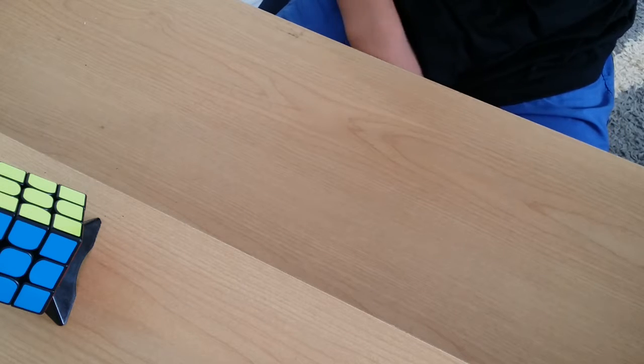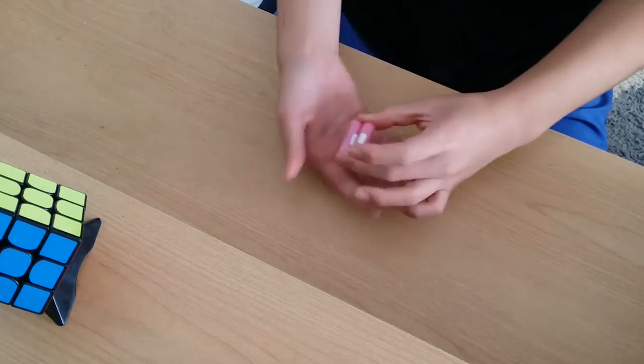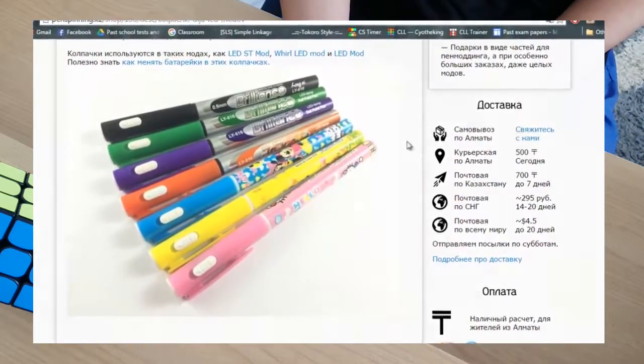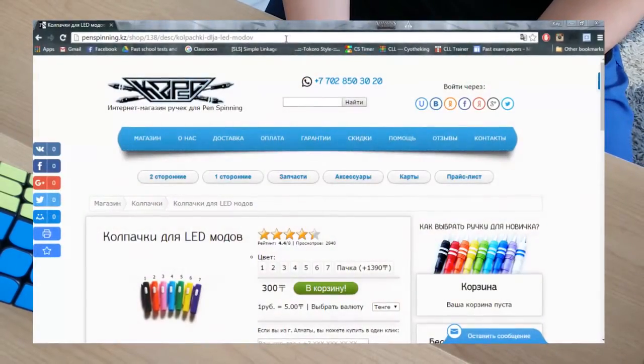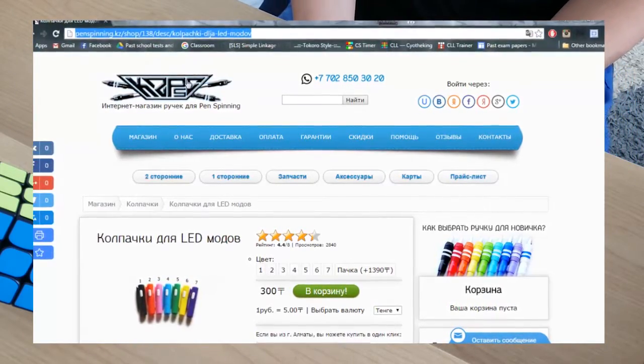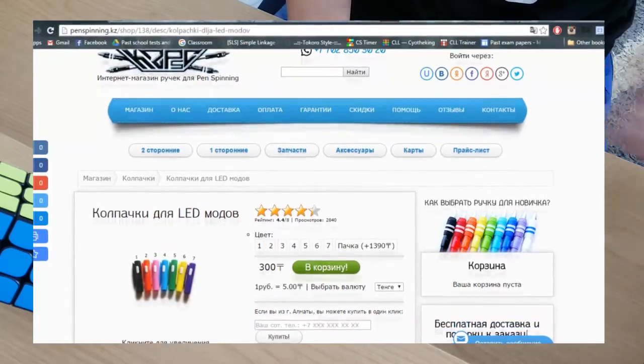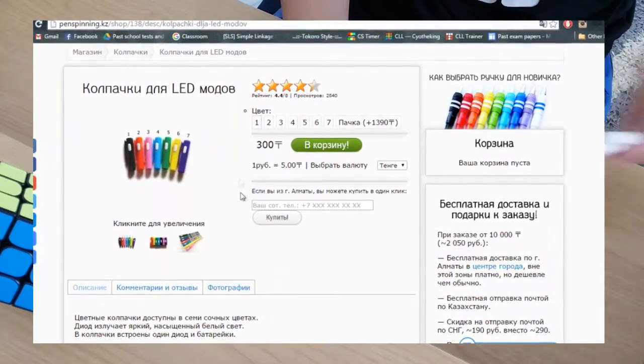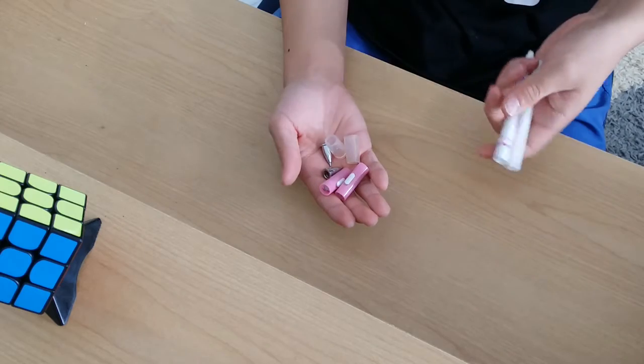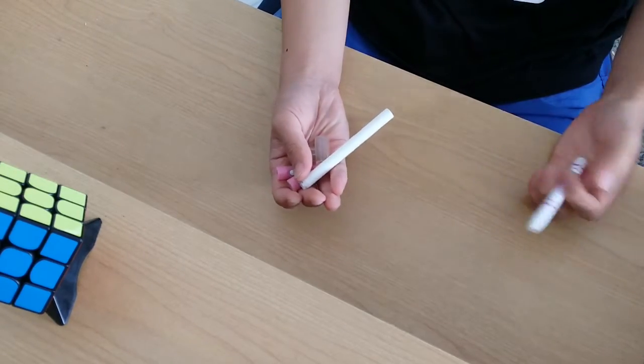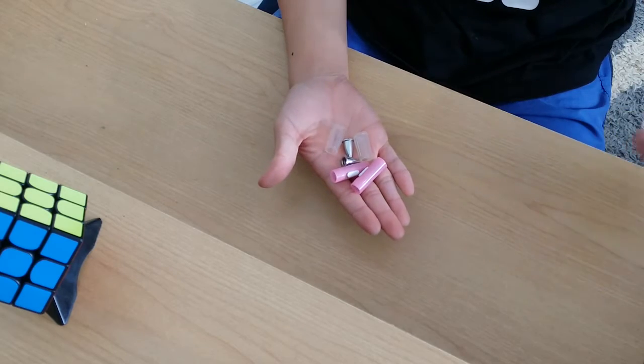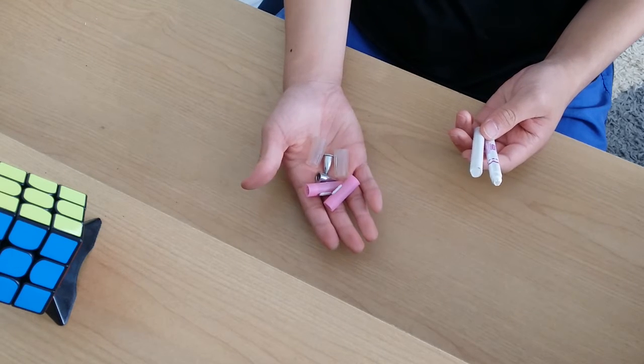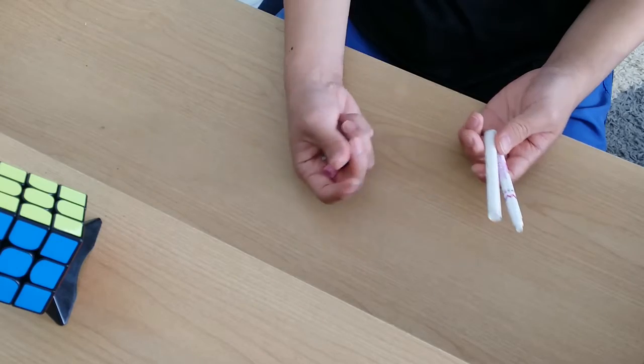So basically, what you need for this is the main things are these caps. They're called Brilliance LED pens, I think. And as far as I know, you can get them off penspinning.kz, which is a Russian site. And this site's amazing because it has like a list of tutorials and stuff. And they sell cool stuff, so go check it out. And you also need a super tip barrel and just other stuff like big grips and tips. But you can probably vary the tips and weights because it is quite a heavy one.